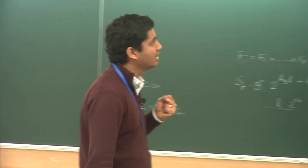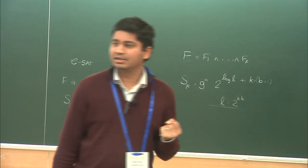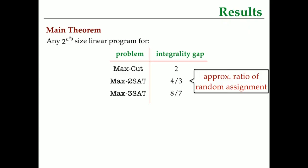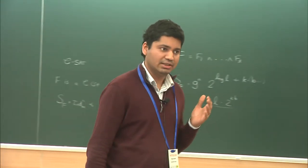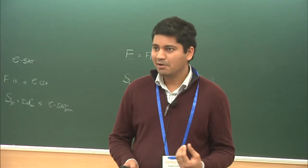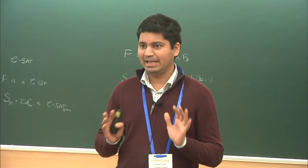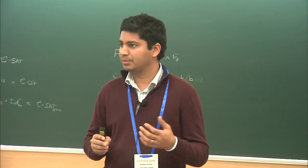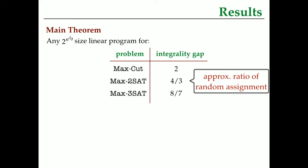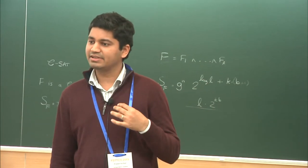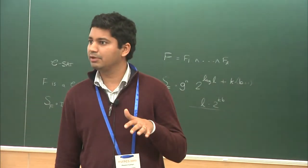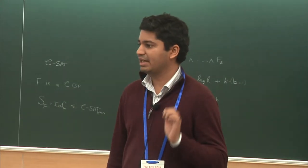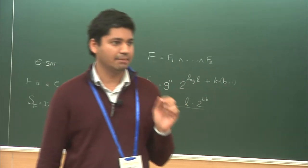Now, these numbers appear funky, but actually they come from the approximation ratio of a very simple algorithm — the algorithm that simply returns a random assignment. One of the first randomized algorithms we learn in algorithms classes is how do you solve max cut? Well, here's one thing you can do: just simply return a random cut. There's a very simple analysis that shows that in expectation, the cut that you return would be half optimal.